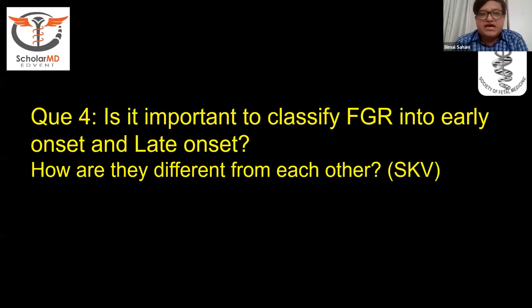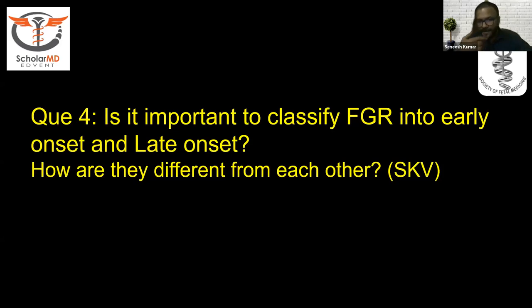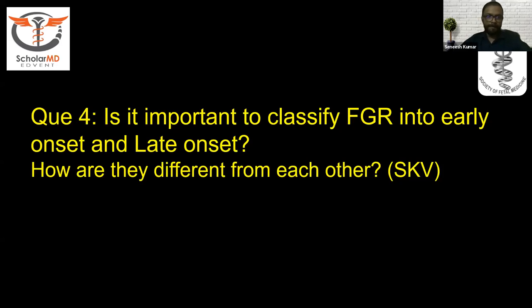Is it important to classify FGR into late onset and early onset, and how are they different from each other? The early FGR and late onset FGR are actually two different phenotypes. The difference starts from the very early process of placentation, where placentation is severely affected in early onset IUGR.